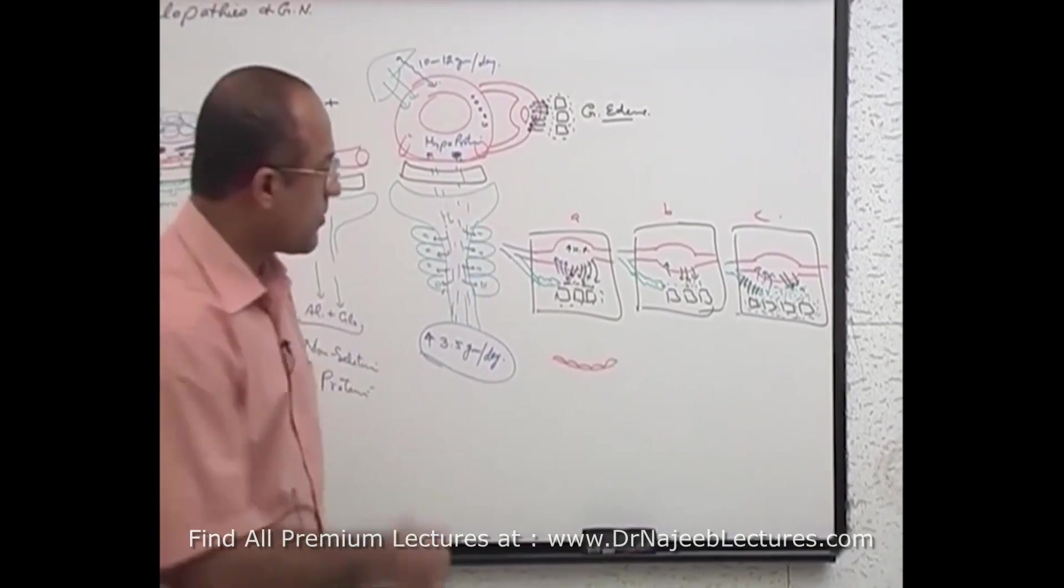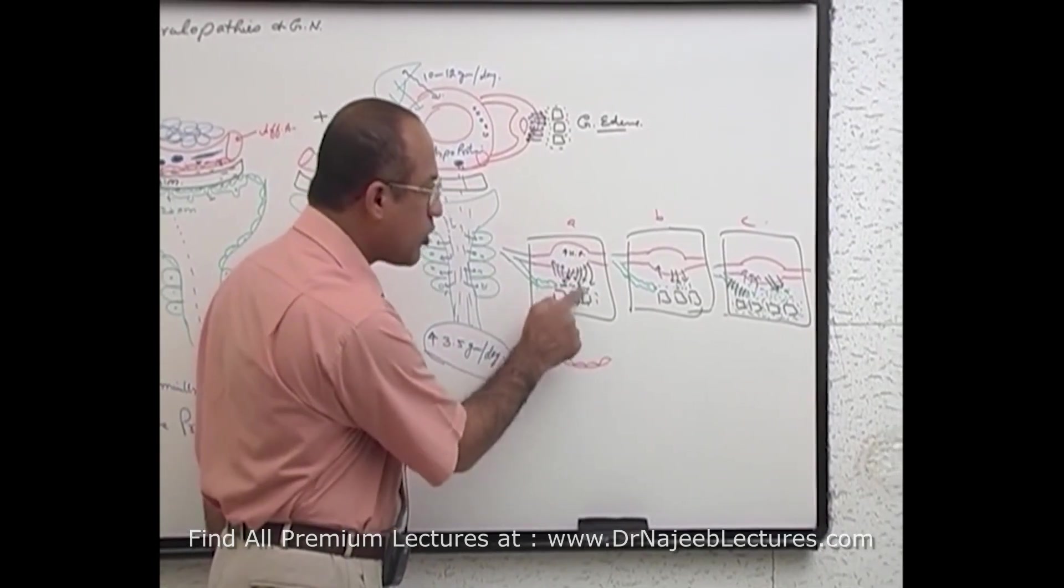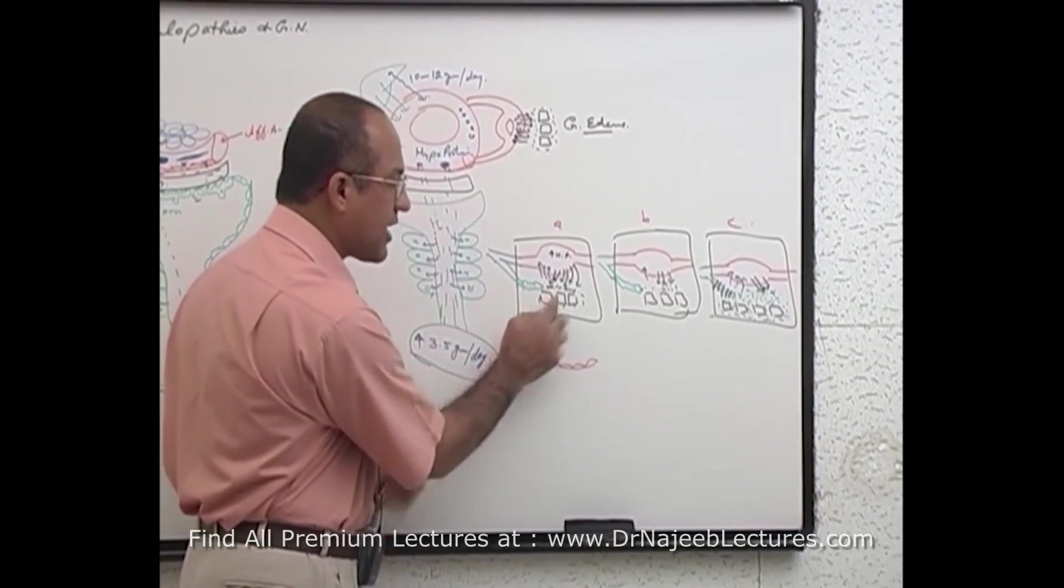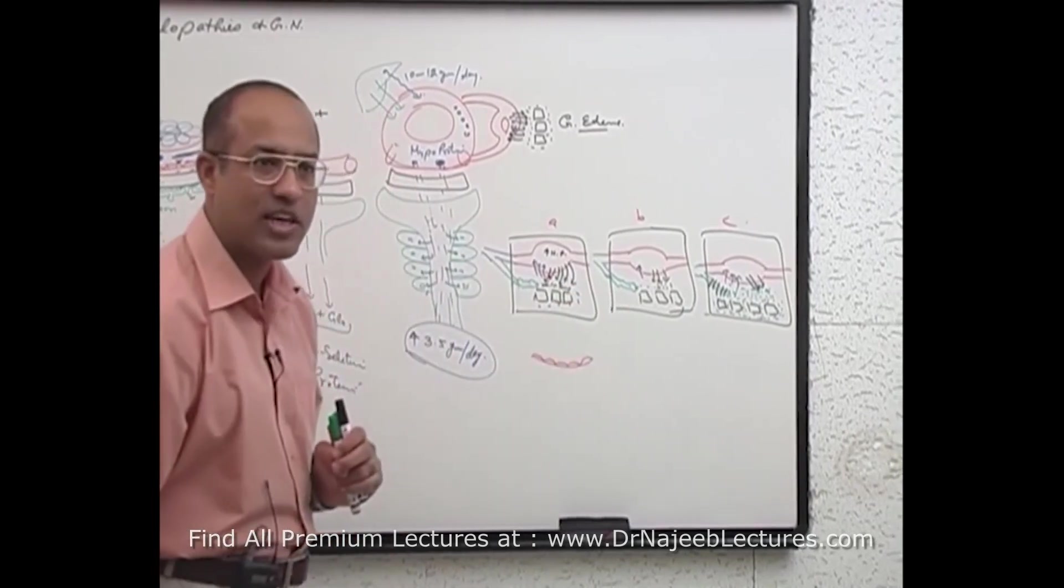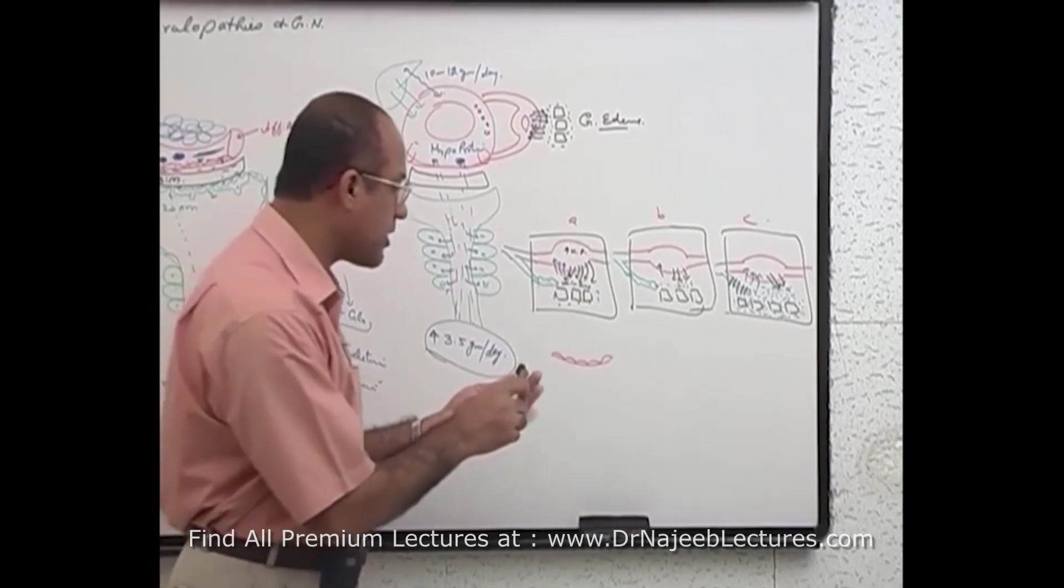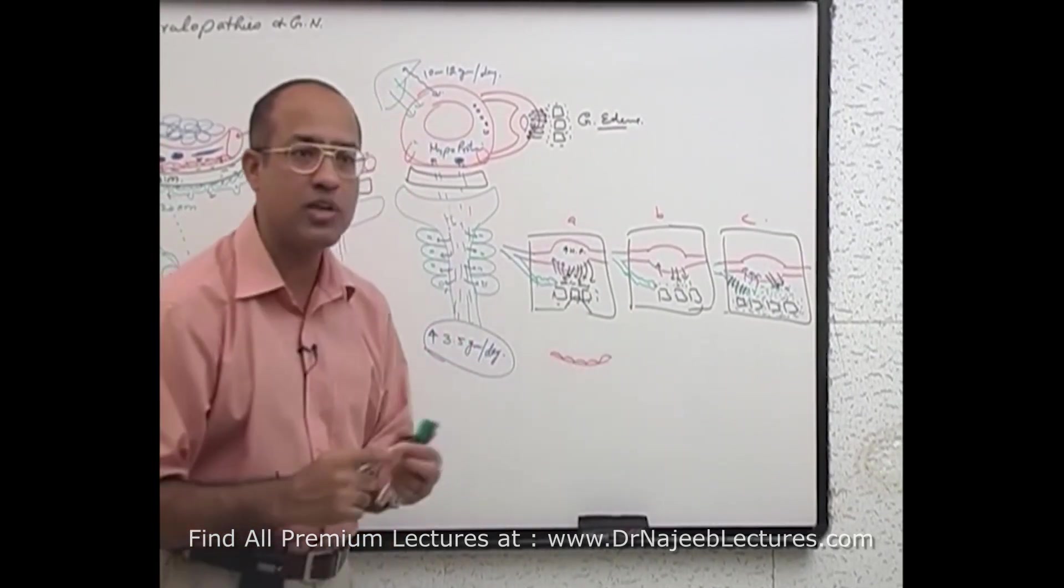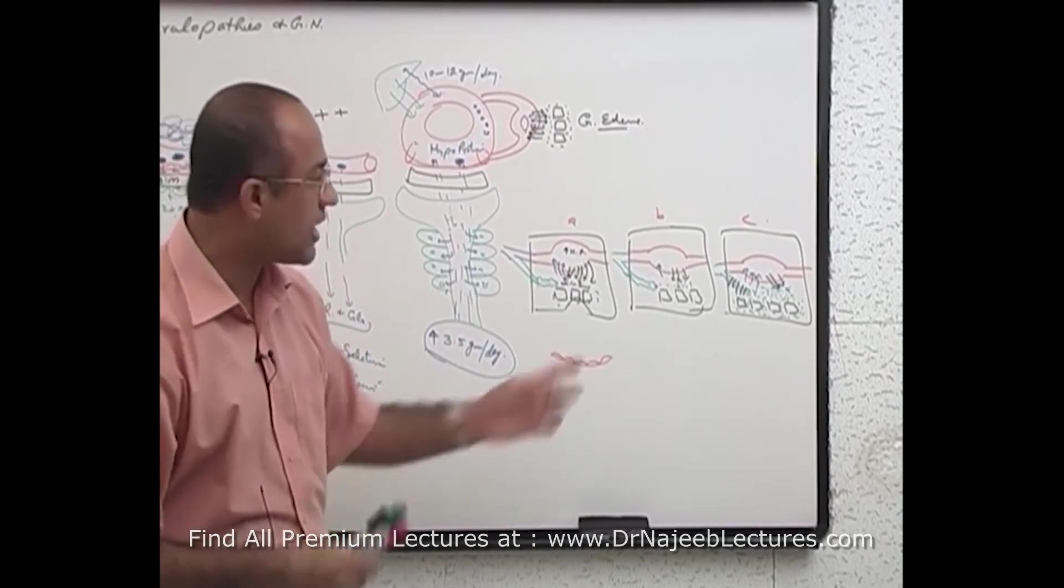Now if you press this tissue with finger, here is only fluid. When you press with the finger, fluid is displaced, edema fluid is displaced. So you will be producing a pit here. With the finger, you can produce a pit here. So this is called pitting edema.